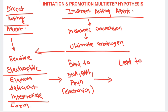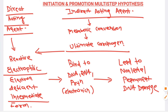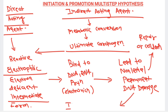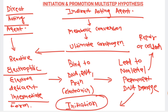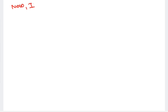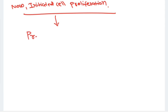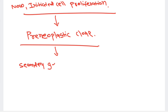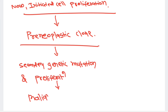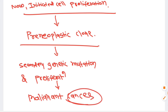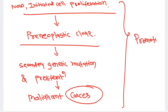These reactive electrophiles can cause non-lethal permanent DNA damage. In the multi-step hypothesis, the body initially tries to repair the damaged DNA or remove it by apoptosis, but if that fails, initiation begins and the cancer process starts, creating what is known as an initiated cell. The initiated cell proliferates in the cell cycle, forming a pre-neoplastic clone. Along with secondary genetic mutation and proliferation, malignancy ultimately develops. This entire promotion process leads to cancer development.